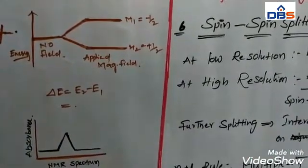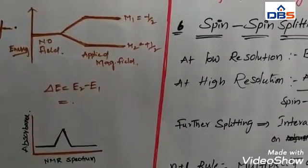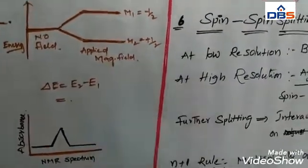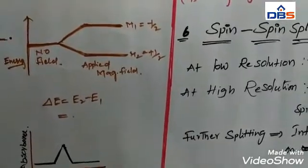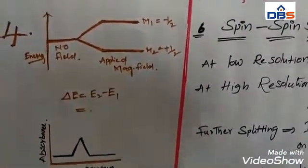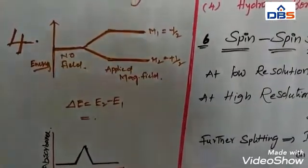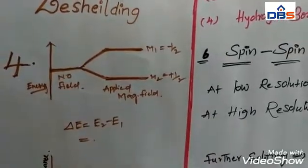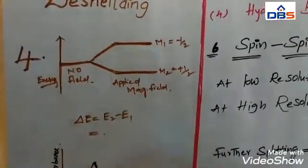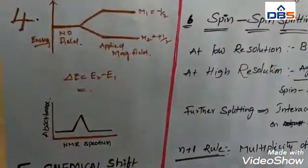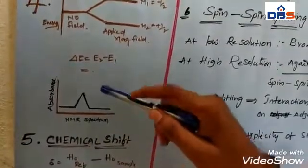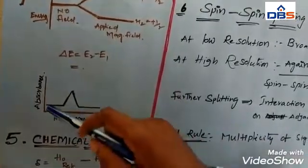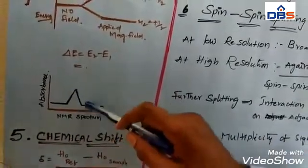Similarly, the frequency absorbed or emitted by a molecule, when it is moving from one energy level to another energy level, it is directly proportional to its applied magnetic field. Then the compound can give the NMR spectra. That NMR spectra is always indicated here like this. This is an absorbance of the energy. This is a peak. This peak is always called as a spectrum.